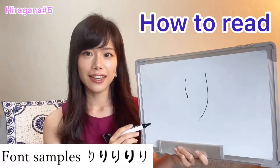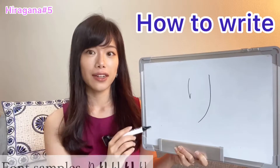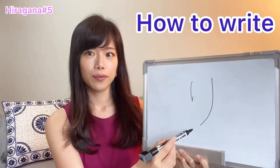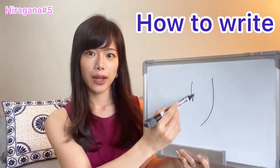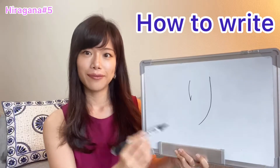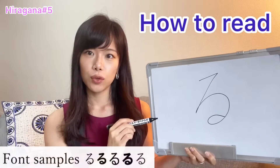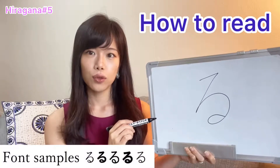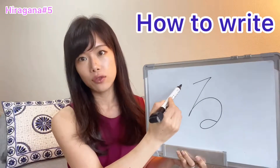This is ri. How do you write ri? One, Two. Once again. One, Two. Ri.